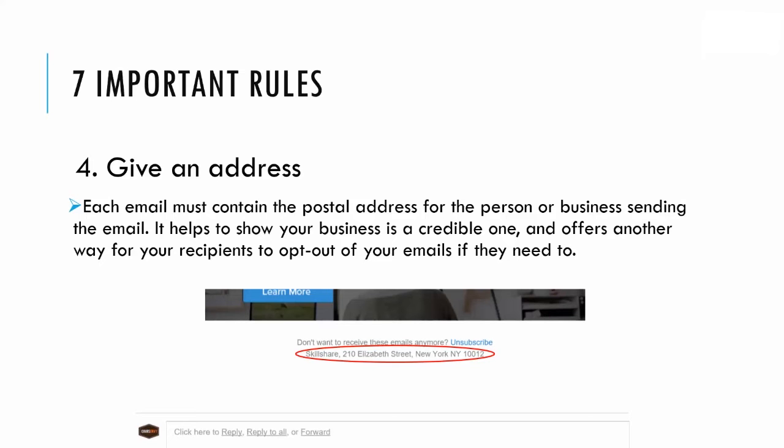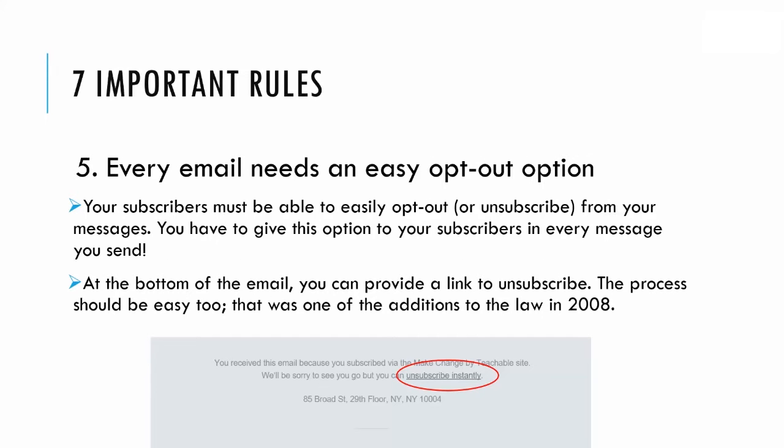Again, including a postal address is another required feature of MailChimp — they automatically input this at the bottom of all your email campaigns. Number five: every email needs an easy opt-out option. Your subscribers must be able to easily opt out or unsubscribe from your messages in every message you send. At the bottom of your email, provide an unsubscribe link. This was one of the additions to the spam law in 2008, and it's done by default in MailChimp.